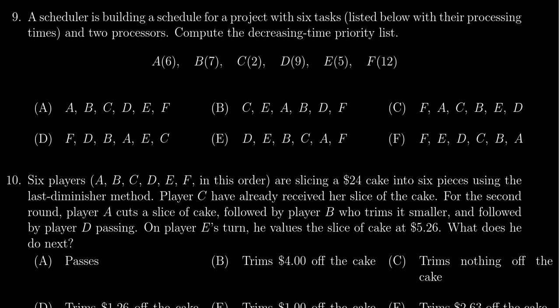And there's going to be two processors in this consideration. We're asked to compute the decreasing time priority list, which honestly, the number of processors doesn't matter. We don't need that information to find the decreasing time priority list.